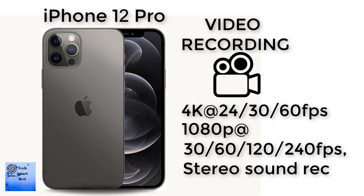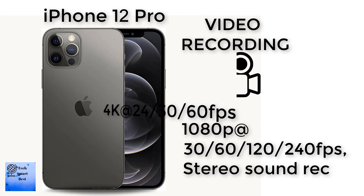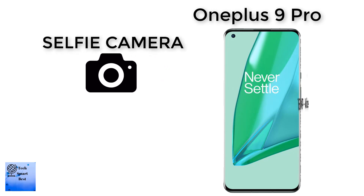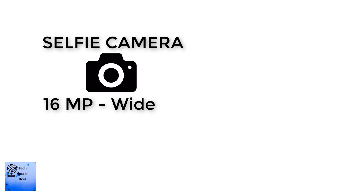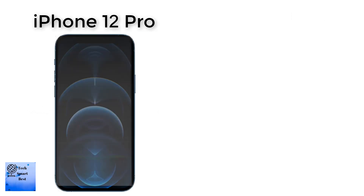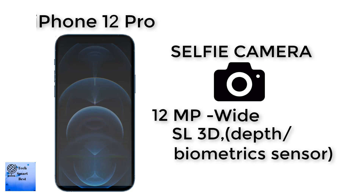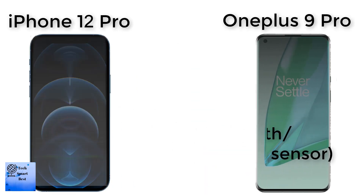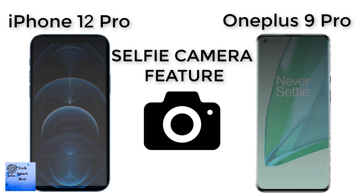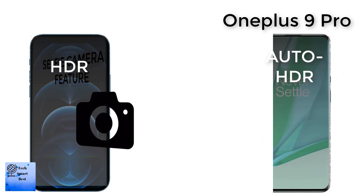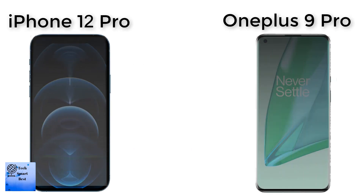The selfie camera of the OnePlus 9 Pro is a single camera at 16 megapixels. The selfie camera of the Apple iPhone 12 Pro is a dual camera: 12 megapixel wide camera and a 3D depth biometric sensor. The selfie camera features of the OnePlus 9 Pro include Auto HDR, and the Apple iPhone 12 Pro selfie camera features include HDR.